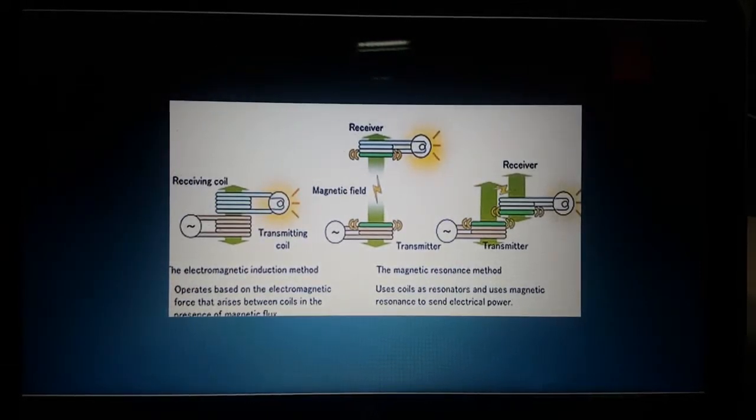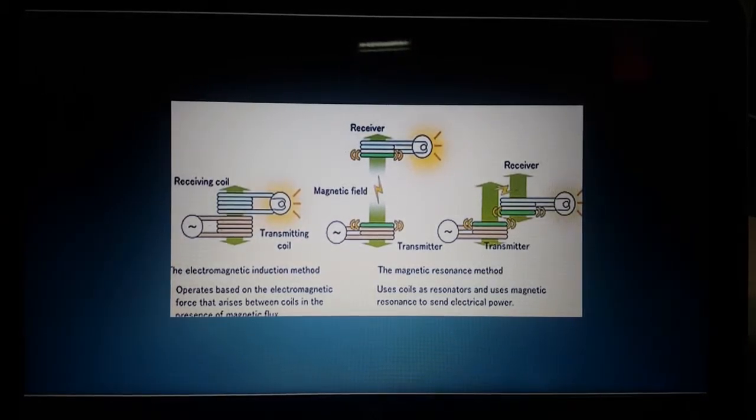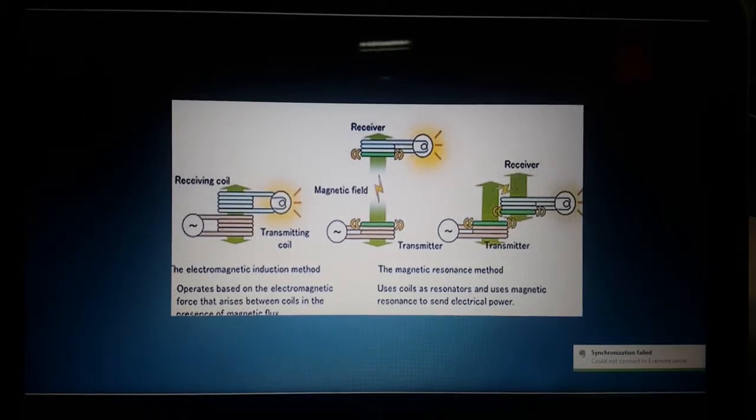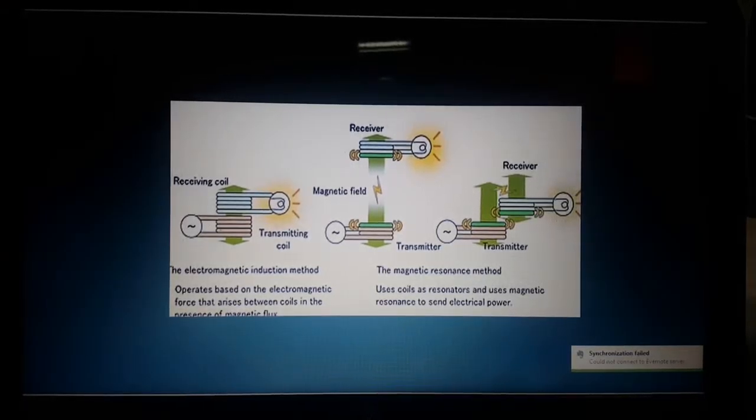When the other coils come within a short distance, the flux will interact with the flux in the device, move the electrons around and charge the battery. If it's that easy, we would think it would be everywhere.